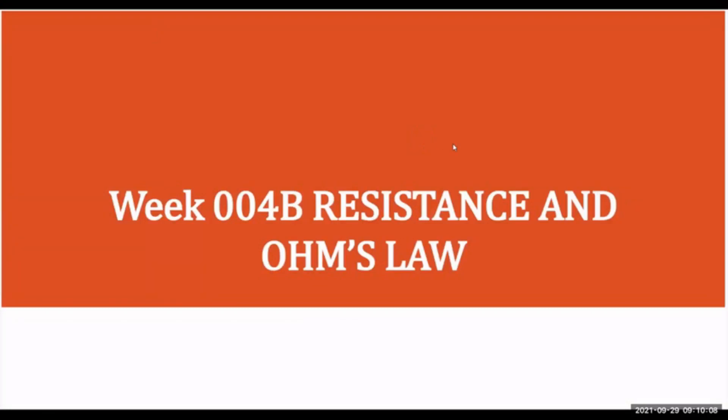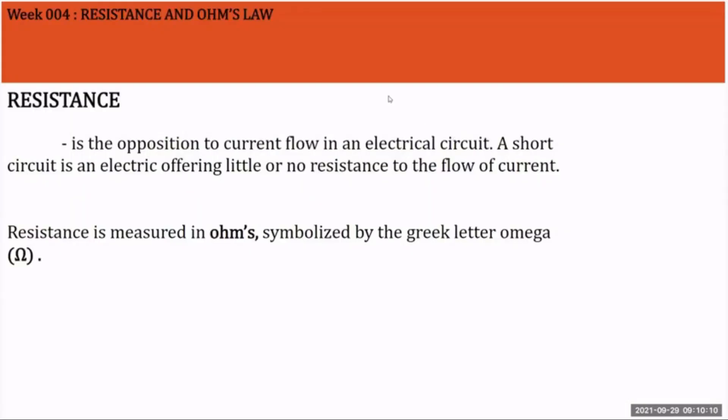By definition, resistance is defined as the opposition to current flow in an electrical circuit. A short circuit is an electric path offering little or no resistance to the flow of current. Resistance is measured in ohms, symbolized by the Greek letter omega.